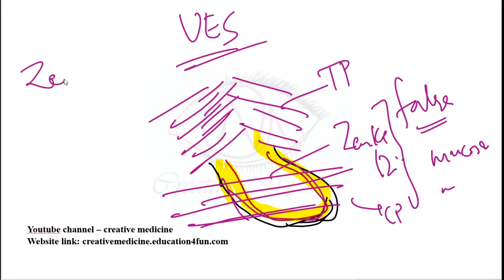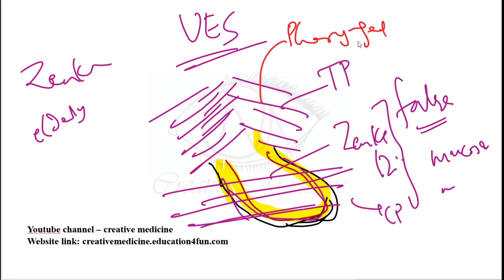Zenker's diverticulum is mainly seen in elderly, diabetic, and male patients. The thyropharyngeus is supplied by the pharyngeal plexus, while cricopharyngeus is supplied by the recurrent laryngeal nerve. This dual nerve supply causes neuromuscular incoordination, leading to herniation through Killian's dehiscence due to increased pressure.